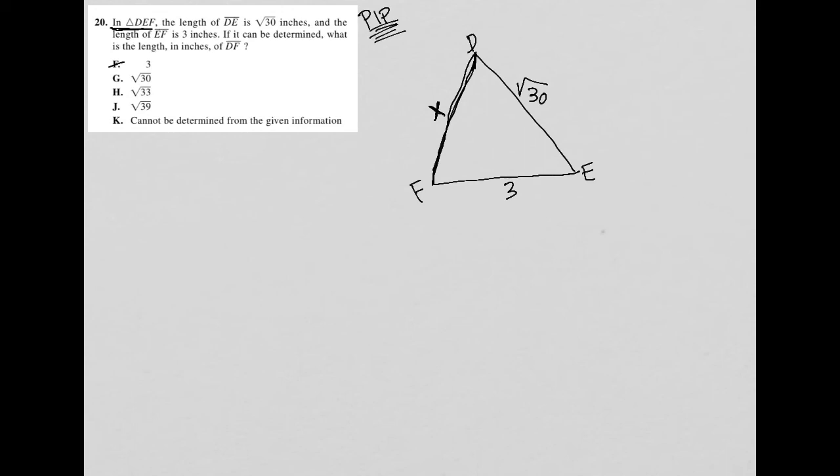Saying that X is equal to root 30, really the same exact concept. There's nothing that tells me this is an isosceles triangle and that X should be the same as DE. So that's out.